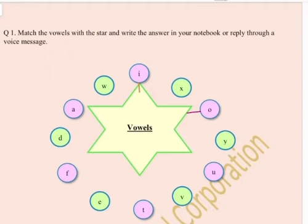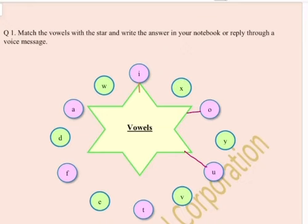Y is a consonant. U — U is a vowel. V is a consonant. T is also a consonant. Now E — E is a vowel, so we will match E with a star. F — consonant. D — consonant. A — A is a vowel, so we will match A with the star. W — W is a consonant.